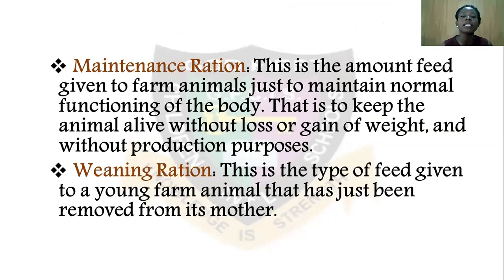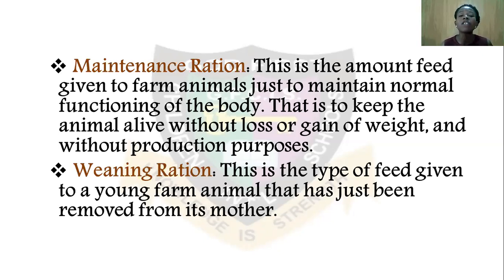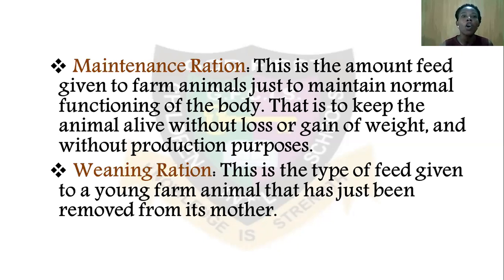Next is maintenance ration. Maintenance ration is the amount of feed given to farm animals just to maintain the normal functioning of the body. In this case, the animals are not being given this feed for production purposes, but to keep them alive without losing or gaining weight. For example, hay and straw are given to animals especially during the dry season just to keep them alive until the dry season ends, because at that time there is a deficiency of fresh forages and fresh grasses.